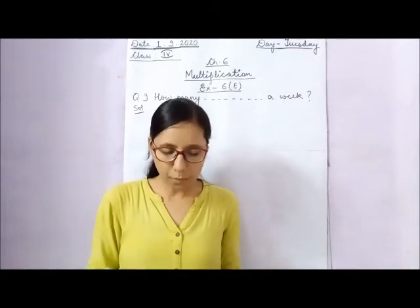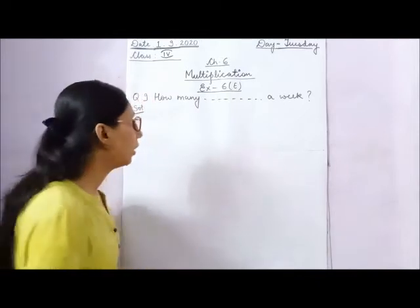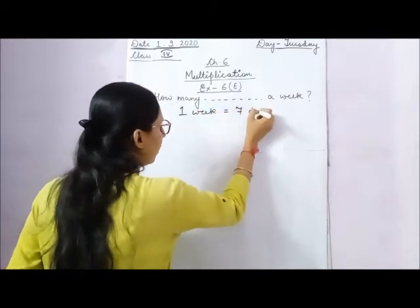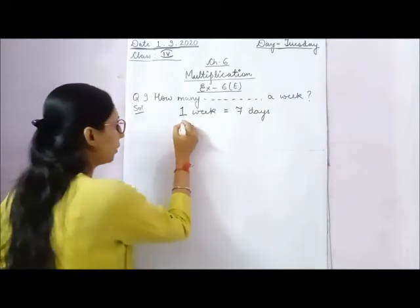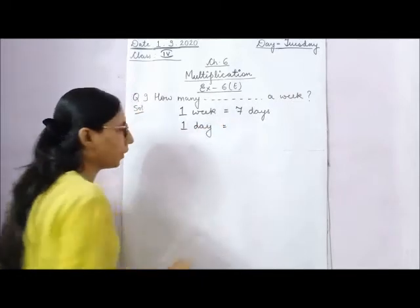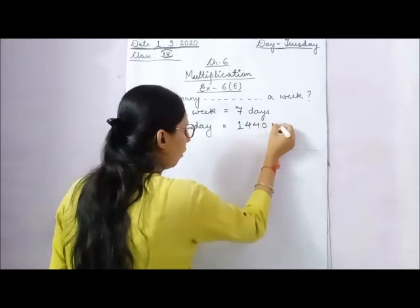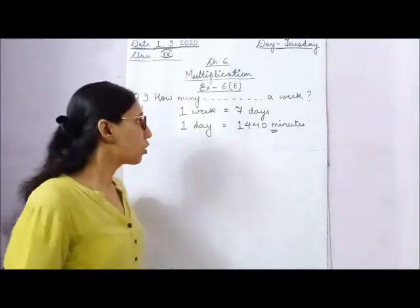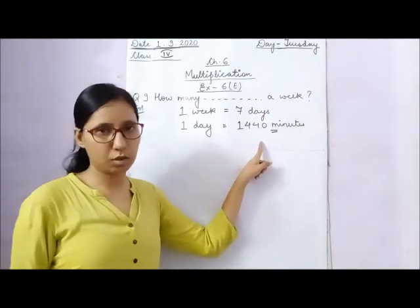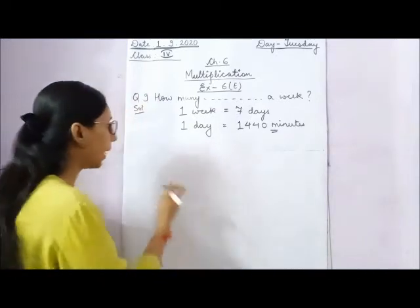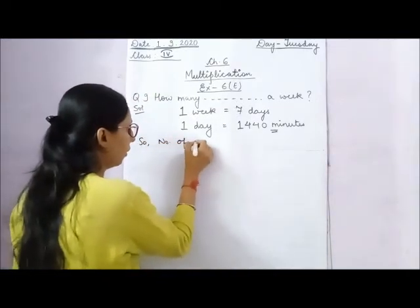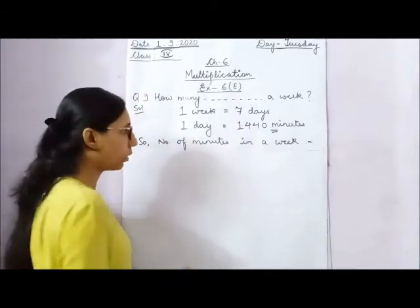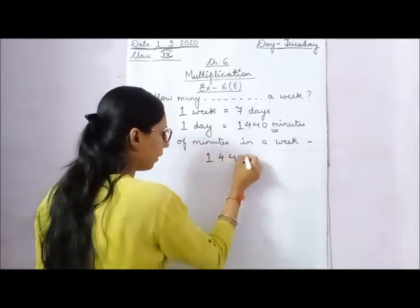Question 9: How many minutes are there in a week? First, in one week there are 7 days, and in one day there are 1,440 minutes. So to find the number of minutes in a week, we multiply 1,440 by 7.